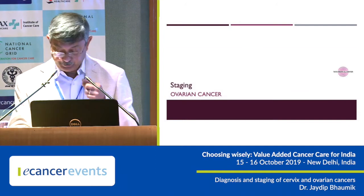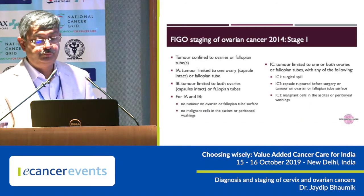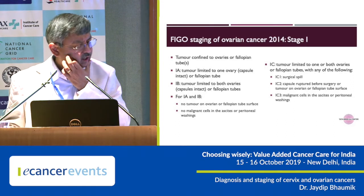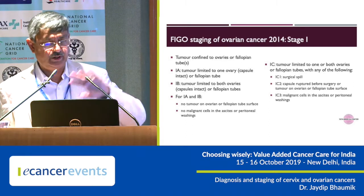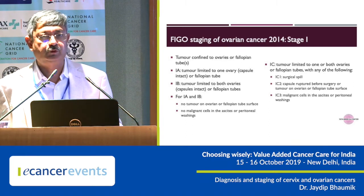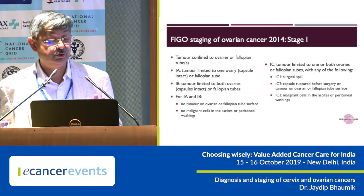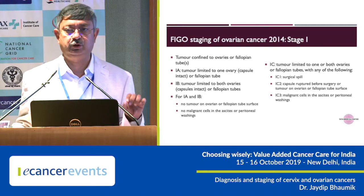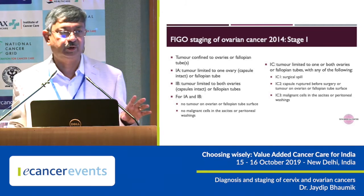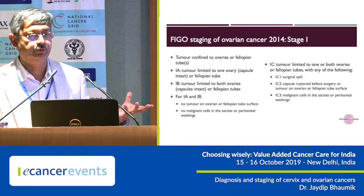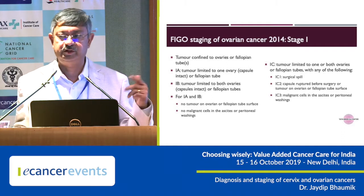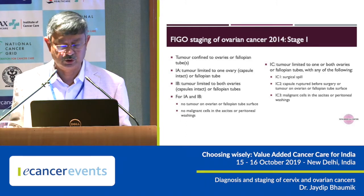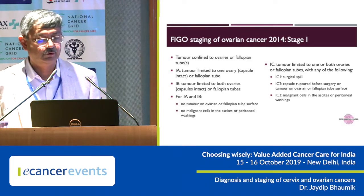Coming to ovarian cancer: FIGO staging was revised in 2014. Sufficient to say that you have to have a tissue diagnosis. You cannot treat ovarian cancer just on the basis of a cytological diagnosis of adenocarcinoma with a mass on imaging — twenty to twenty-five percent of ovarian masses are actually secondary cancers. You are treating inappropriately if you base treatment on that alone. Tissue diagnosis is compulsory for ovarian cancer.